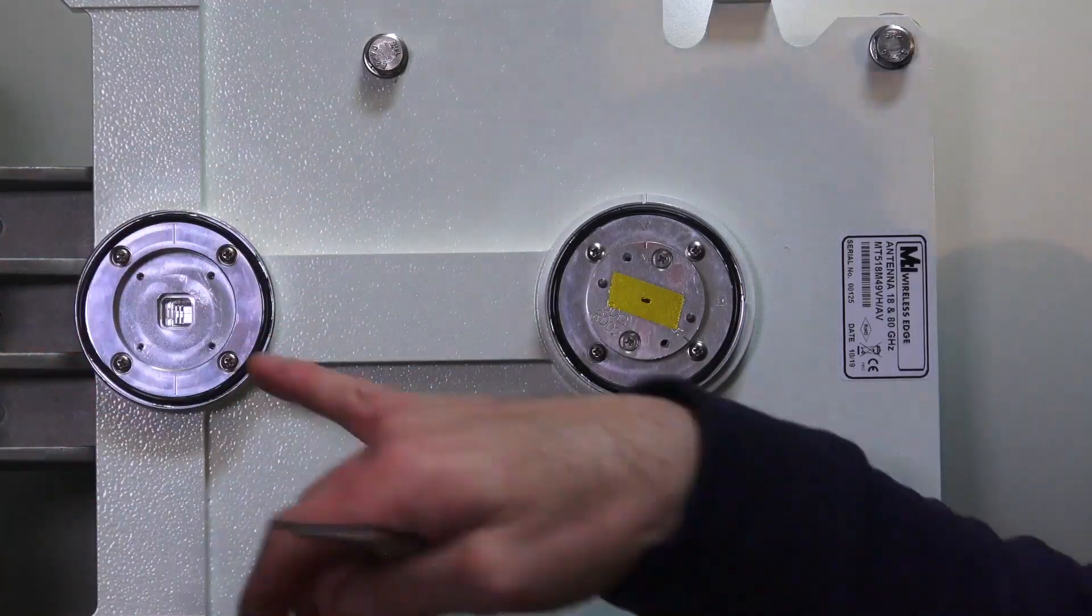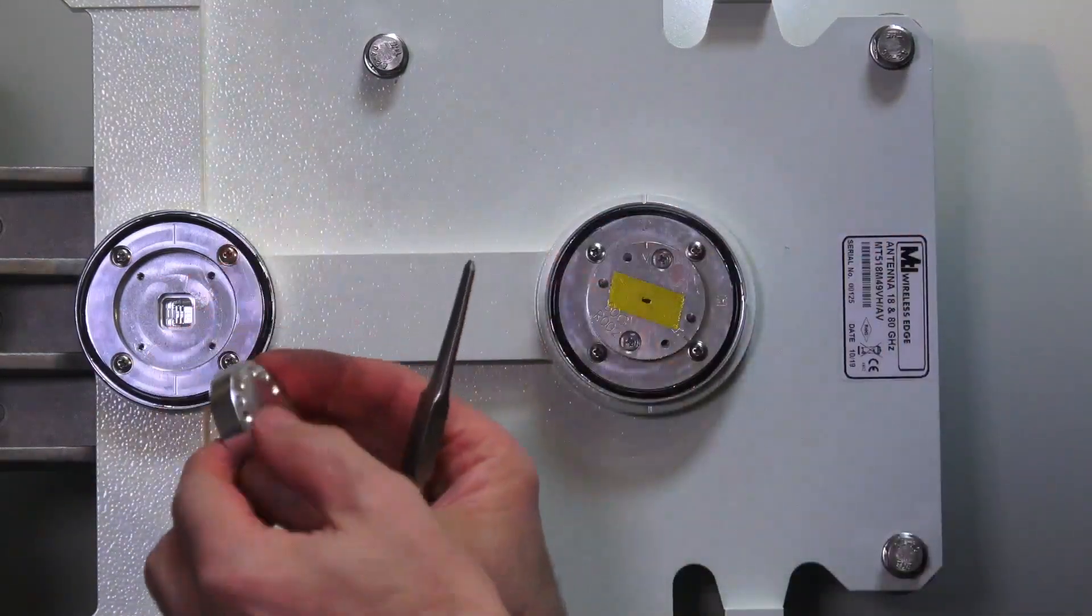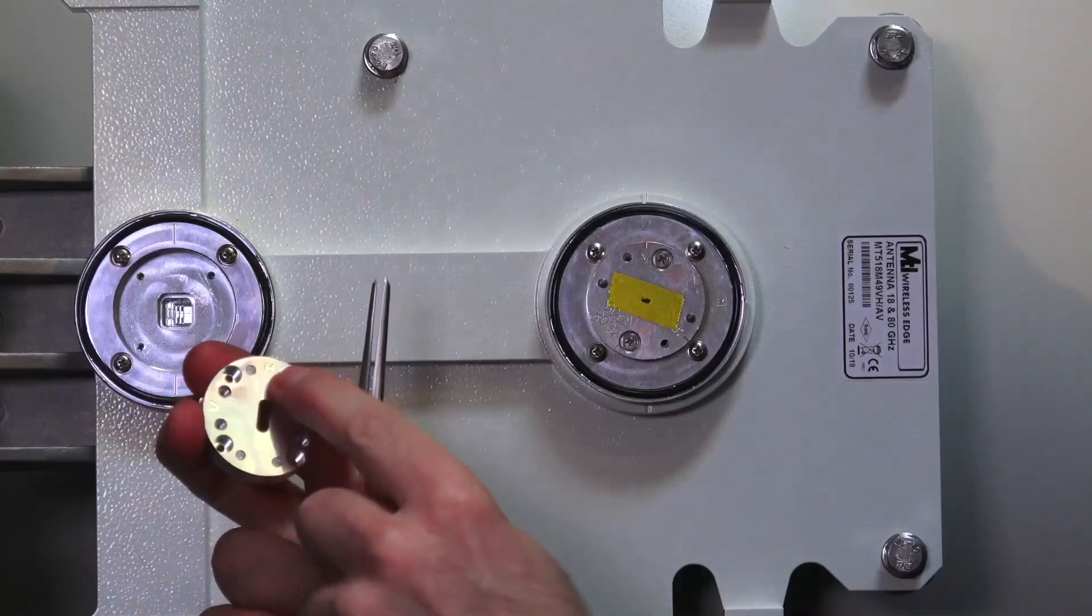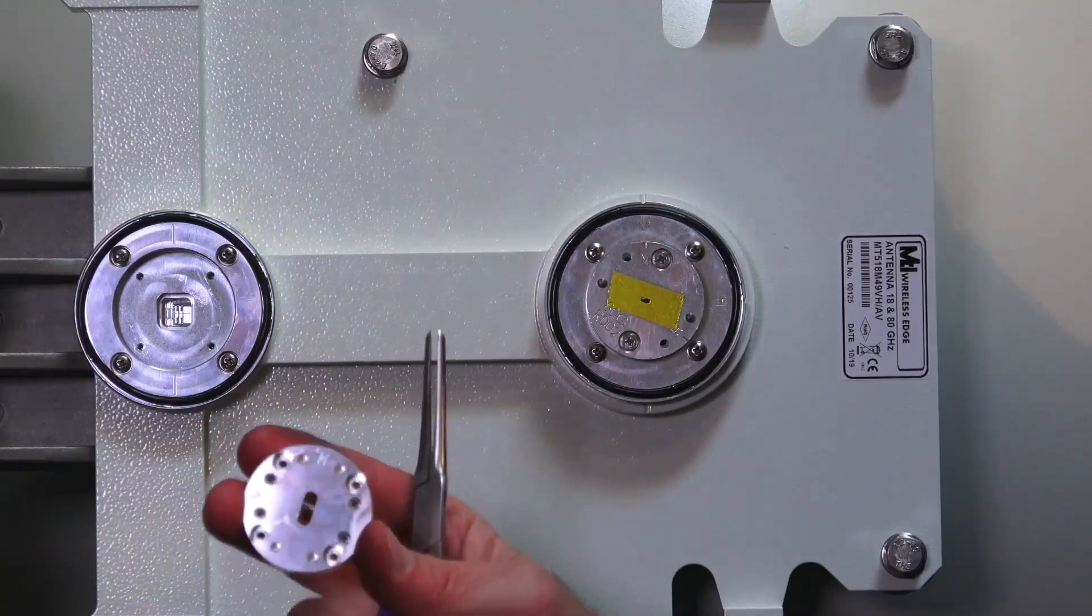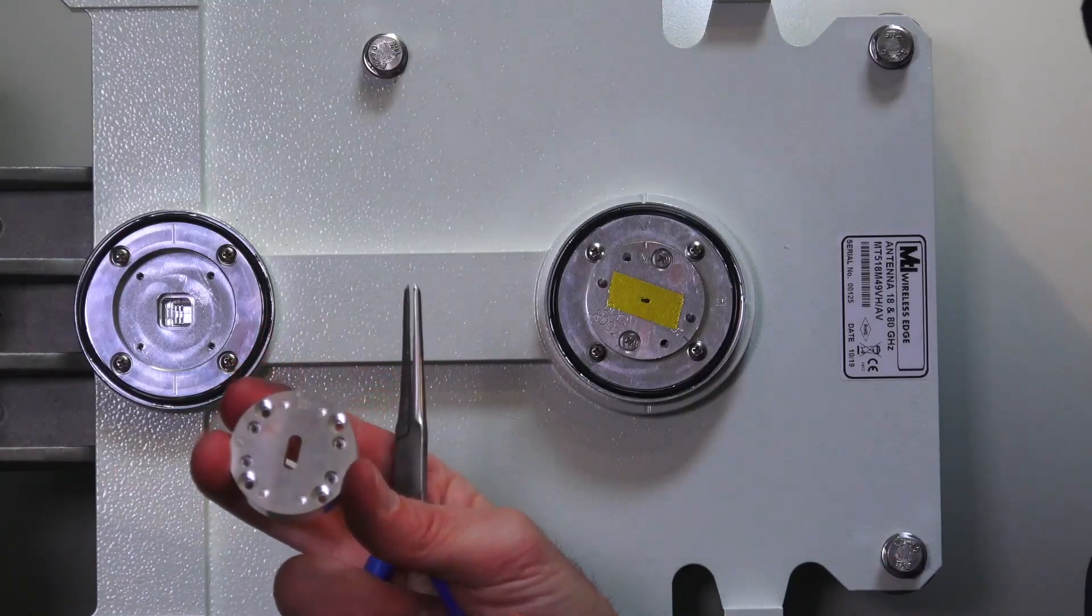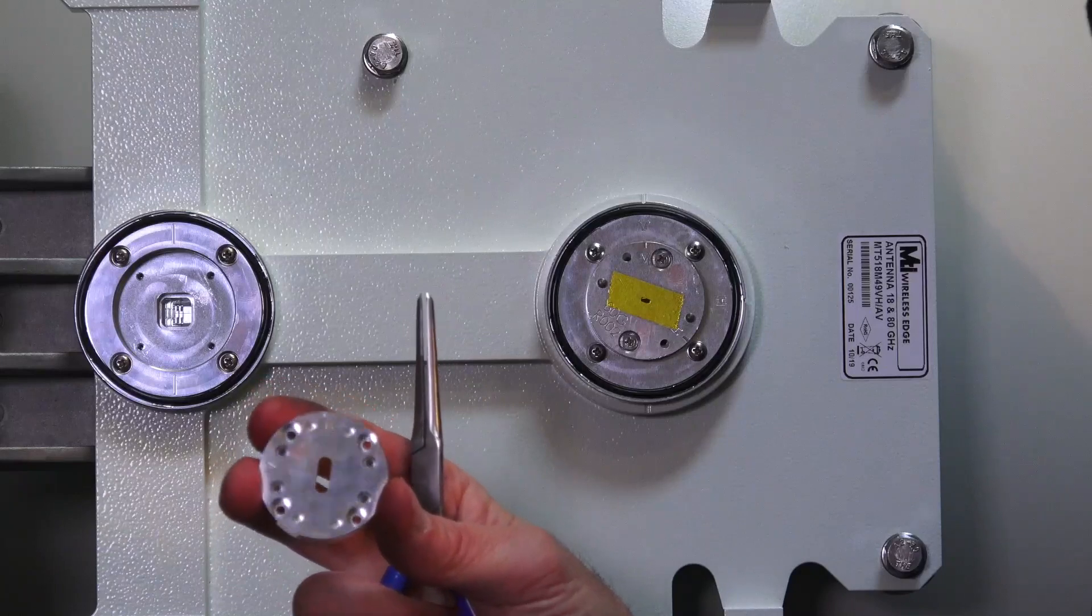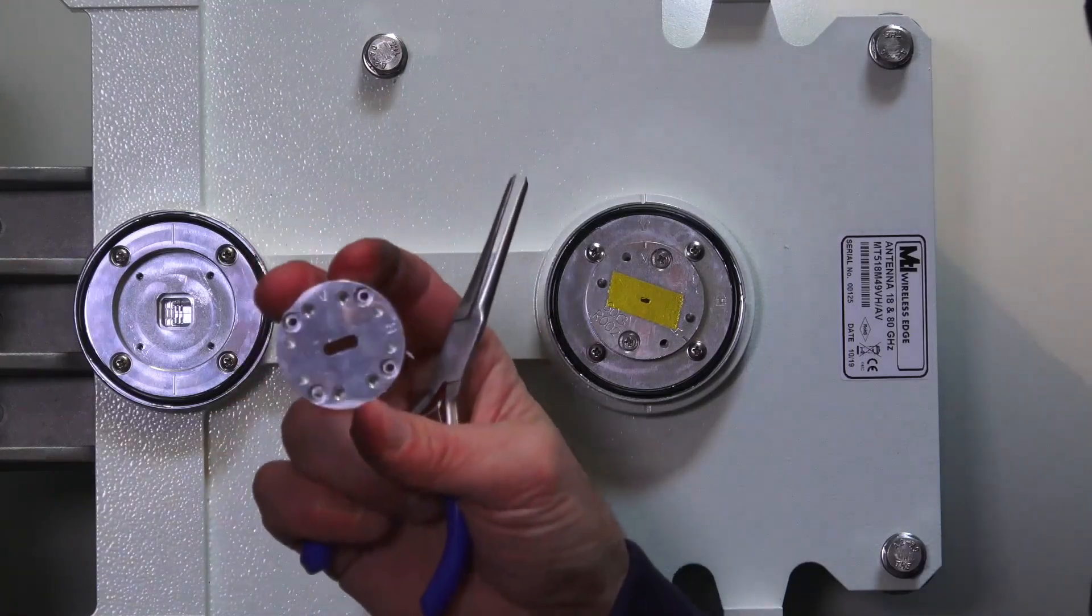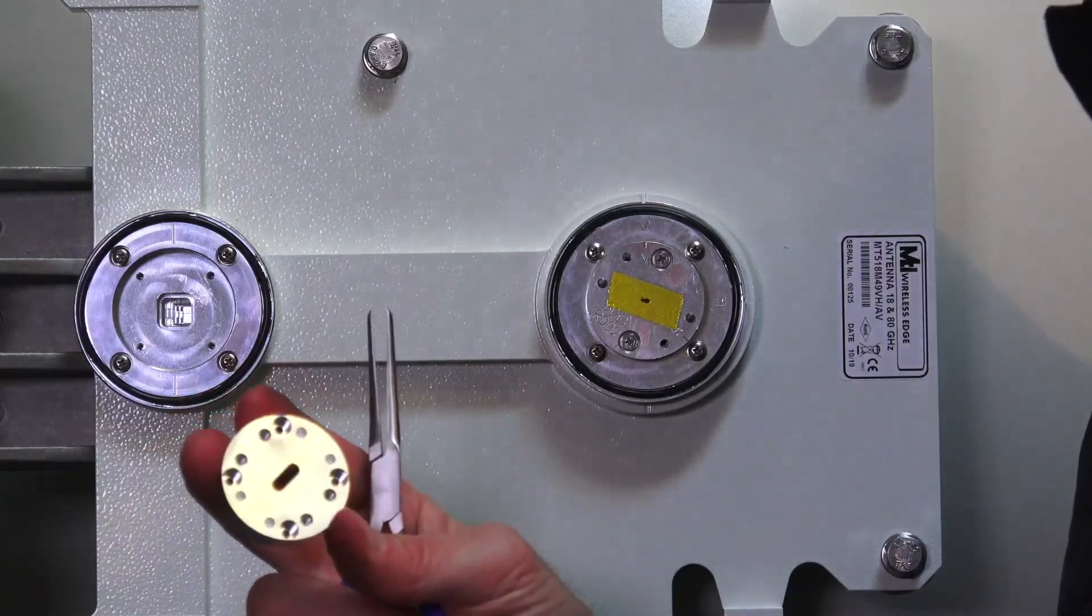So now you'll notice that we've got a square hole which lines up with this square hole. Again, this is stamped with an H and a V. So we're going to set this for vertical polarization. So this is where it's important to look at your FCC license, and that will tell you what polarization your microwave side has been granted, either vertical or horizontal, depending on your location. In our case, we'll just set this for vertical.